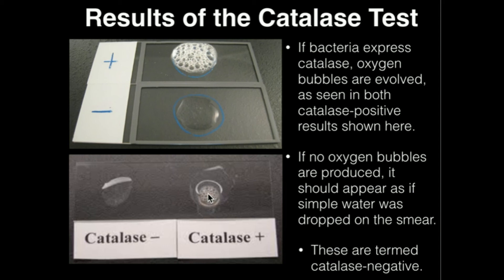If it's catalase negative — such as streptococcus — then no catalase is expressed or made by the bacteria, and those results are going to be catalase negative. Make sure to watch the demonstration on the catalase test.